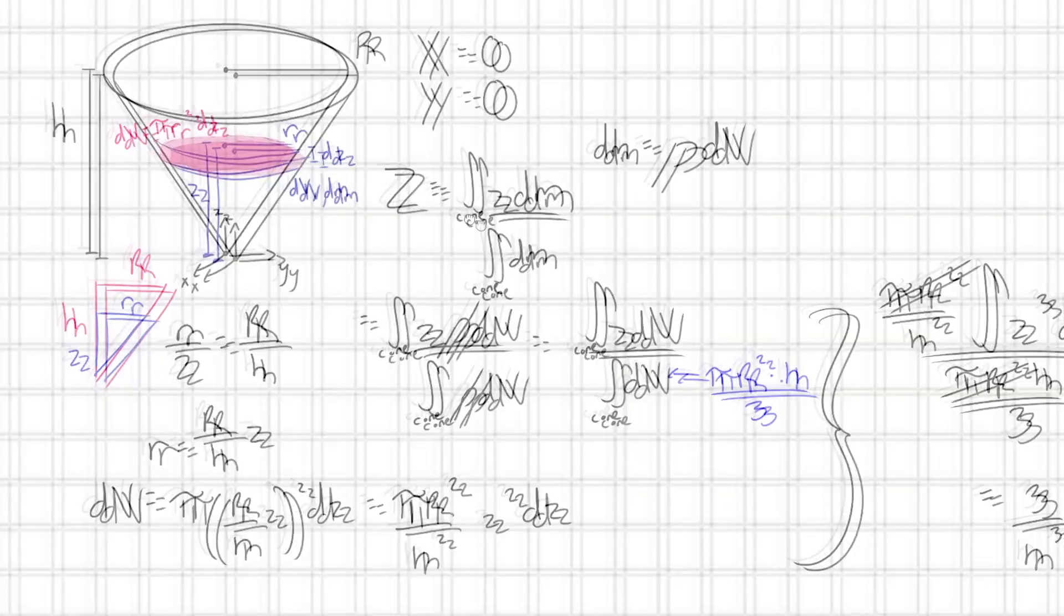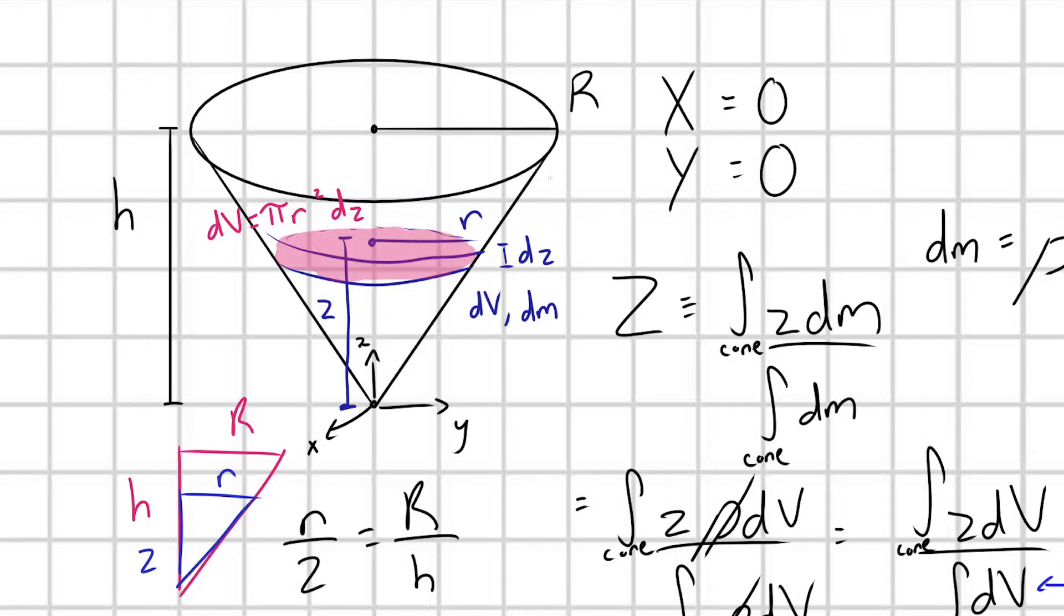Notice how, even though at the beginning of the problem I defined this cone as having some radius capital R, the radius of the base of the cone never appears in the final expression. So it really doesn't matter what the size of this base is relative to the height of the cone.